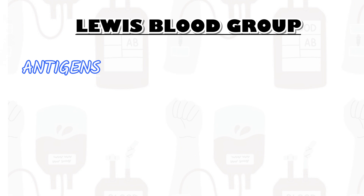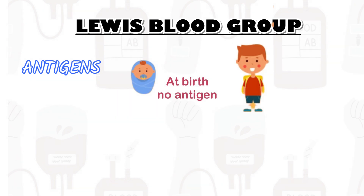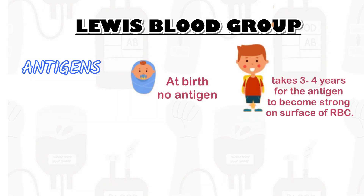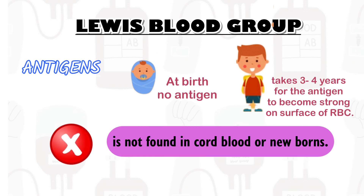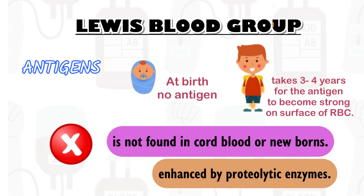At birth, no antigen is present. It takes 3 to 4 years for the antigen to become strong on the surface of RBCs. Therefore, it is not found in cord blood or newborns. Lewis antigens are enhanced by proteolytic enzymes.